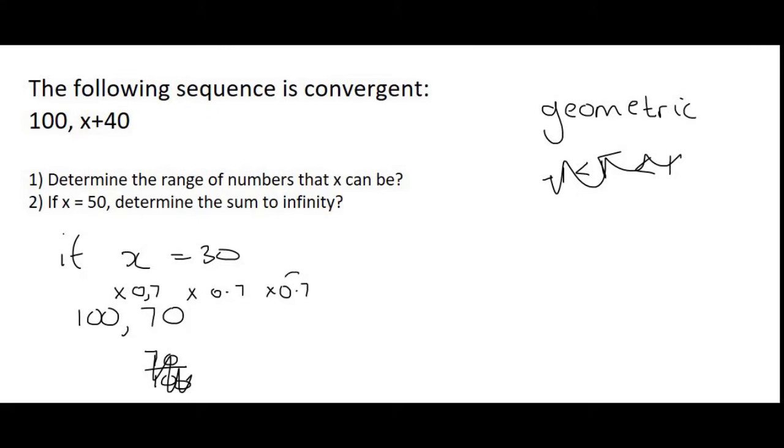So we see that the r value here is 0.7. Let's say that x was minus 50. Well then you would have 100 as your first term. Your second term would be minus 50 plus 40 which would be minus 10.